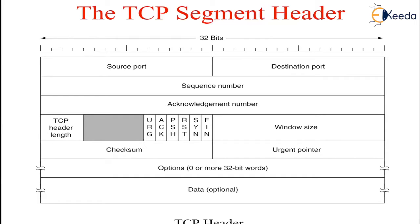Next comes a 6-bit field that is not used. After that, there are 6 one-bit flags.